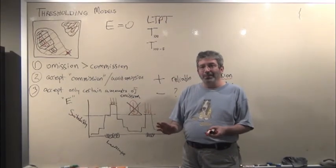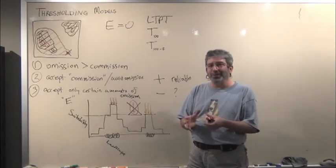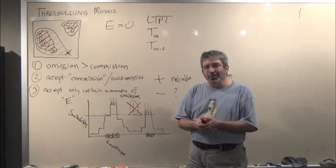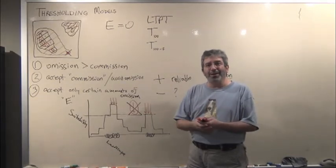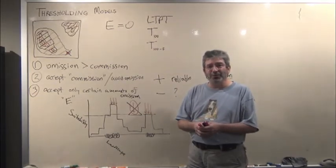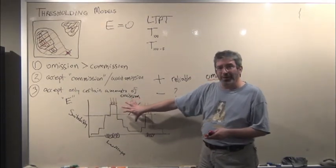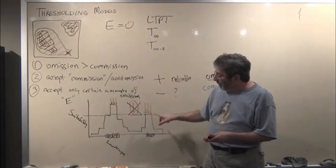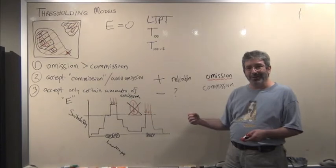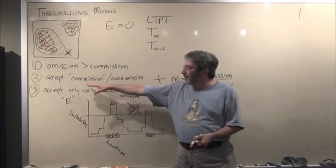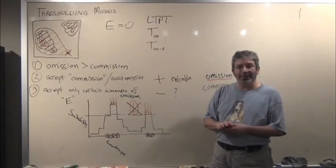We're establishing a threshold based on where the presence points are falling with respect to suitability. A very simple framework, but in a niche modeling world, in a world where you're attempting to delineate the entire ecological potential of the species and thereby the geographic range of the species, you have the opportunity to decide on the threshold that maximizes avoidance of omission error and sacrifices a little bit on the commission side to be able to achieve that goal.